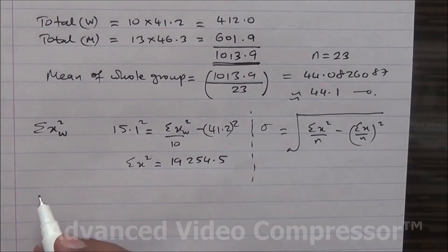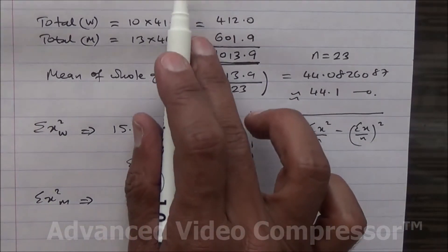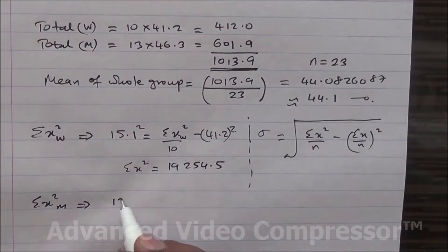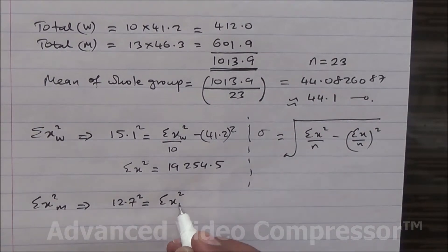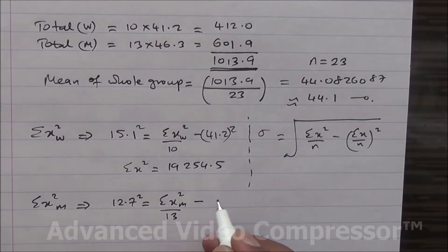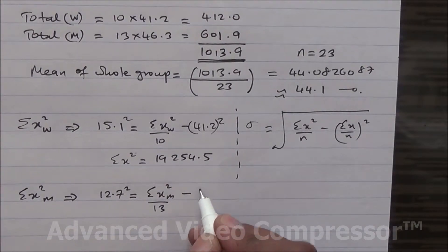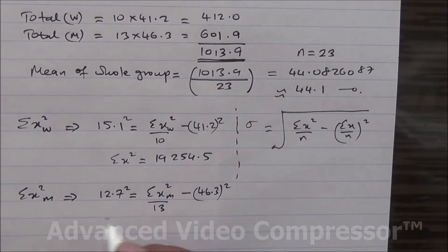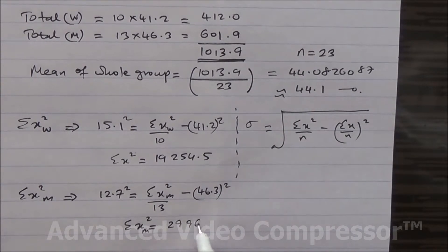We do the same for the men. For the men, the standard deviation is 12.7. So 12.7 squared equals summation of x squared for the men divided by 13, minus 46.3 squared. Performing the calculation, the summation of x squared for the men comes out to 29,964.14.